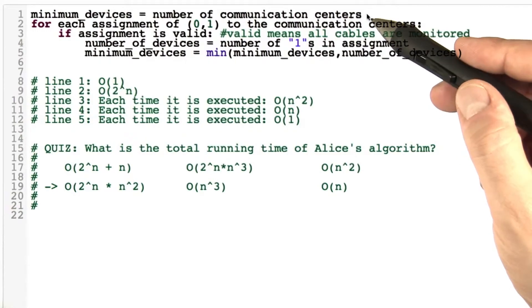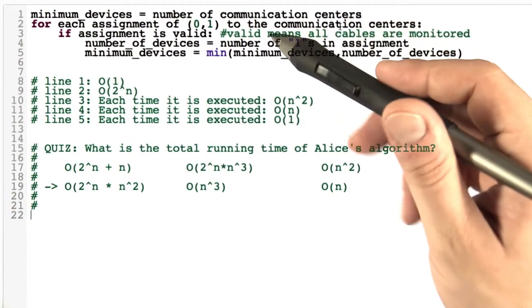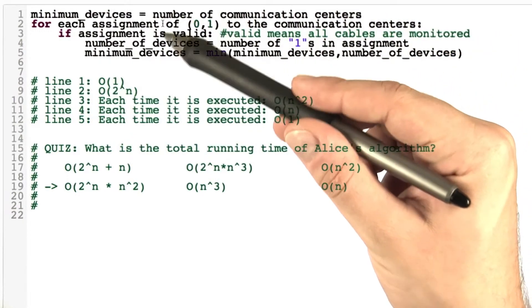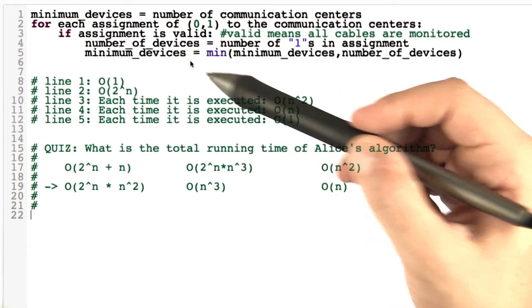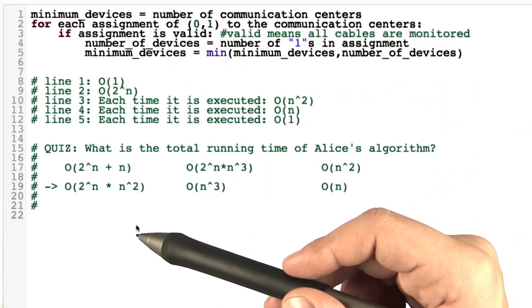And the good thing is that, because we have O notation, we could do this analysis without actually concretely stating how all of this algorithm is programmed. So as I hope you see, it's quite a useful notation to have.